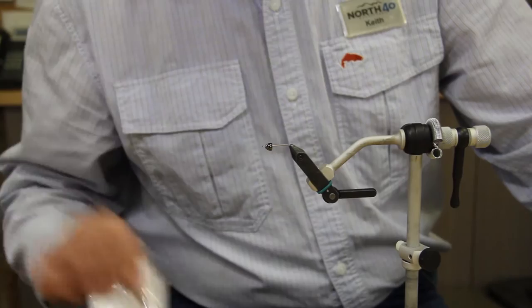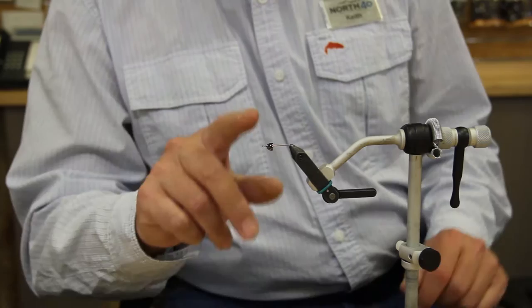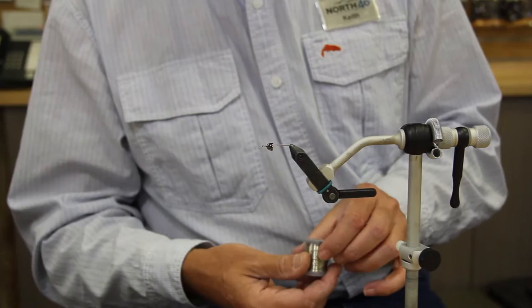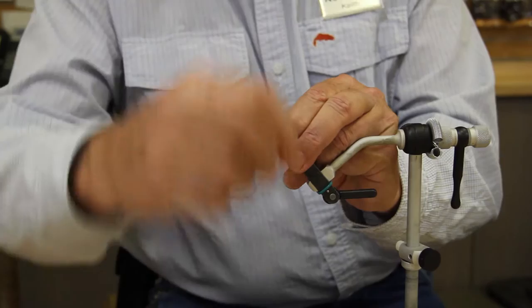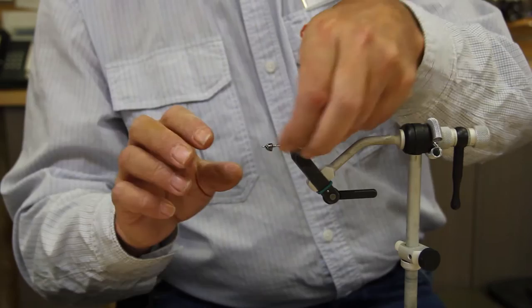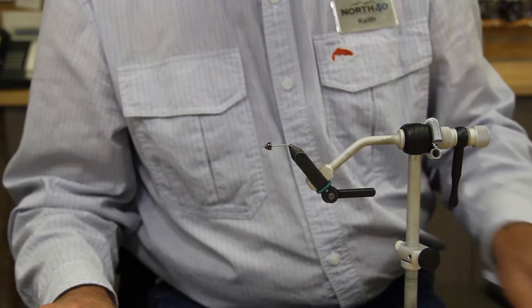You can use the Umpqua streamer hooks. Like I said, anything that will work for you. We've got our medium-sized brass cone head in black nickel on here. We're going to add some lead-free wire. That is the 0.02 diameter. And you're only going to need maybe five or six wraps. I'm going to get that stuffed up in the cone there.